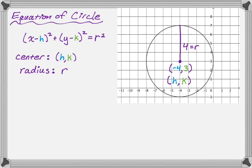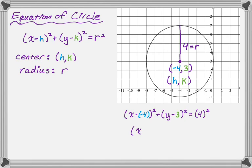I'm going to substitute into the equation of the circle. So I get x minus negative four squared, plus y minus three squared, equals the radius four squared. Then you want to clean this up — you don't want that minus and negative together, and you don't leave four squared; you write 16 instead.